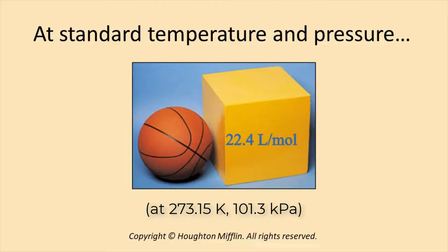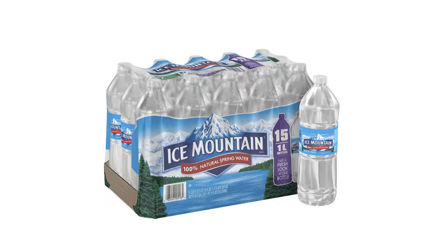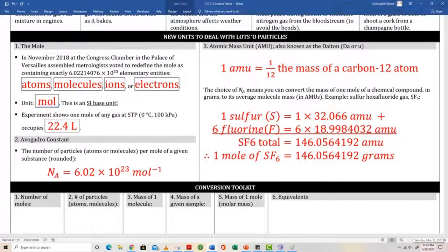This slide gives you a good perspective. At standard atmospheric pressure and temperature, one mole of ideal gas occupies 22.4 liters of volume. There's a basketball for comparison, and here's a 1 liter water bottle that we're probably all familiar with. It turns out, at standard atmospheric pressure and temperature, one mole of any substance contains 6.02 times 10 to the 23rd particles.